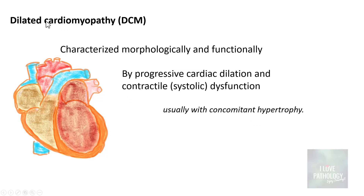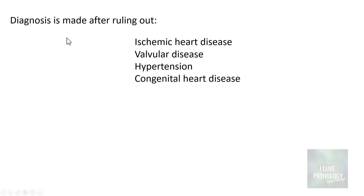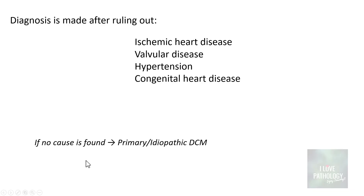Though we say it is dilated, it also involves some hypertrophy of the cardiac musculature. You diagnose primary dilated cardiomyopathy when you rule out underlying causes such as ischemic heart disease, valvular disease, hypertension, and congenital heart disease. If no cause is found, it is referred to as primary or idiopathic dilated cardiomyopathy; if there is an underlying cause, it is secondary cardiomyopathy.